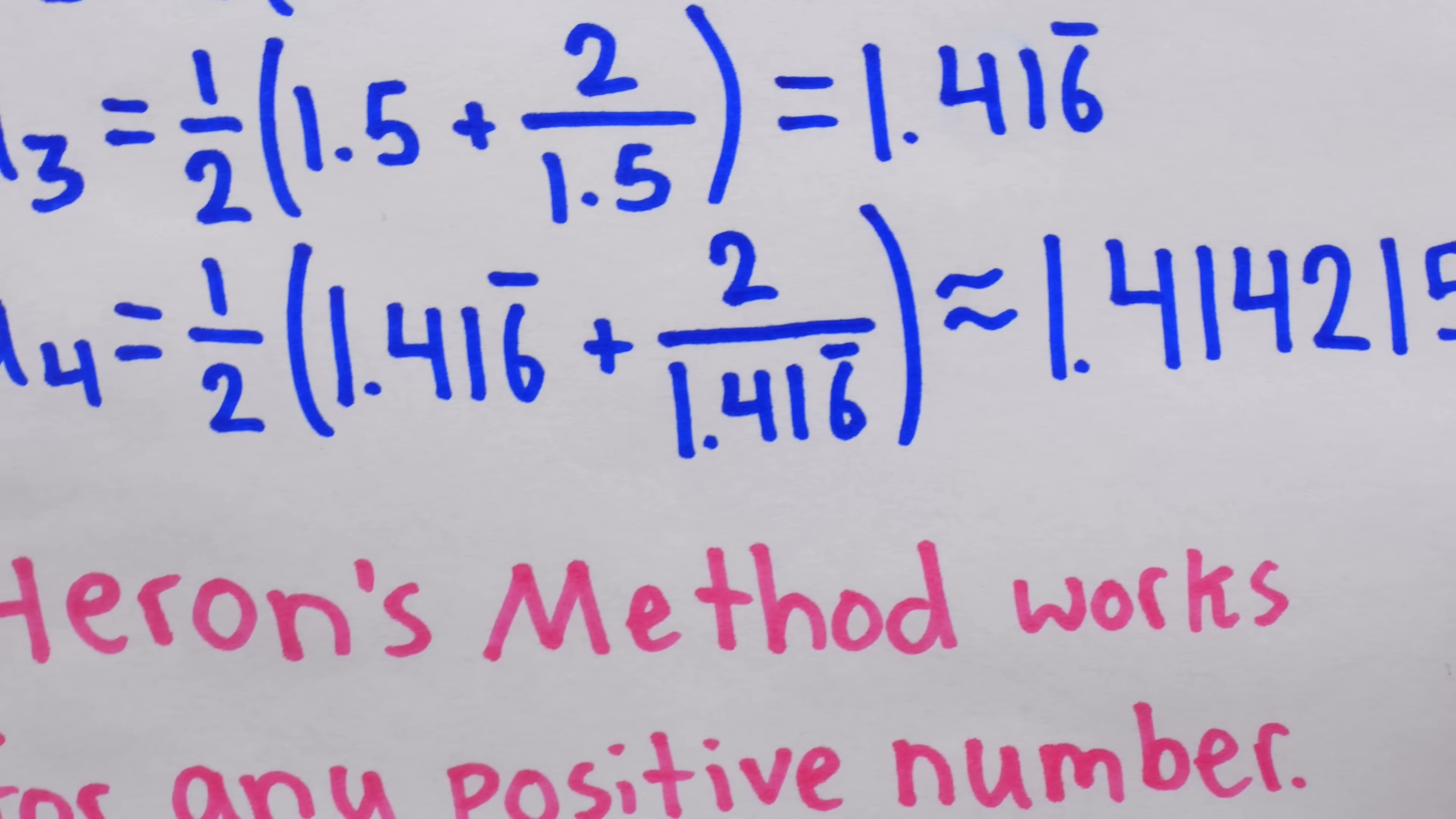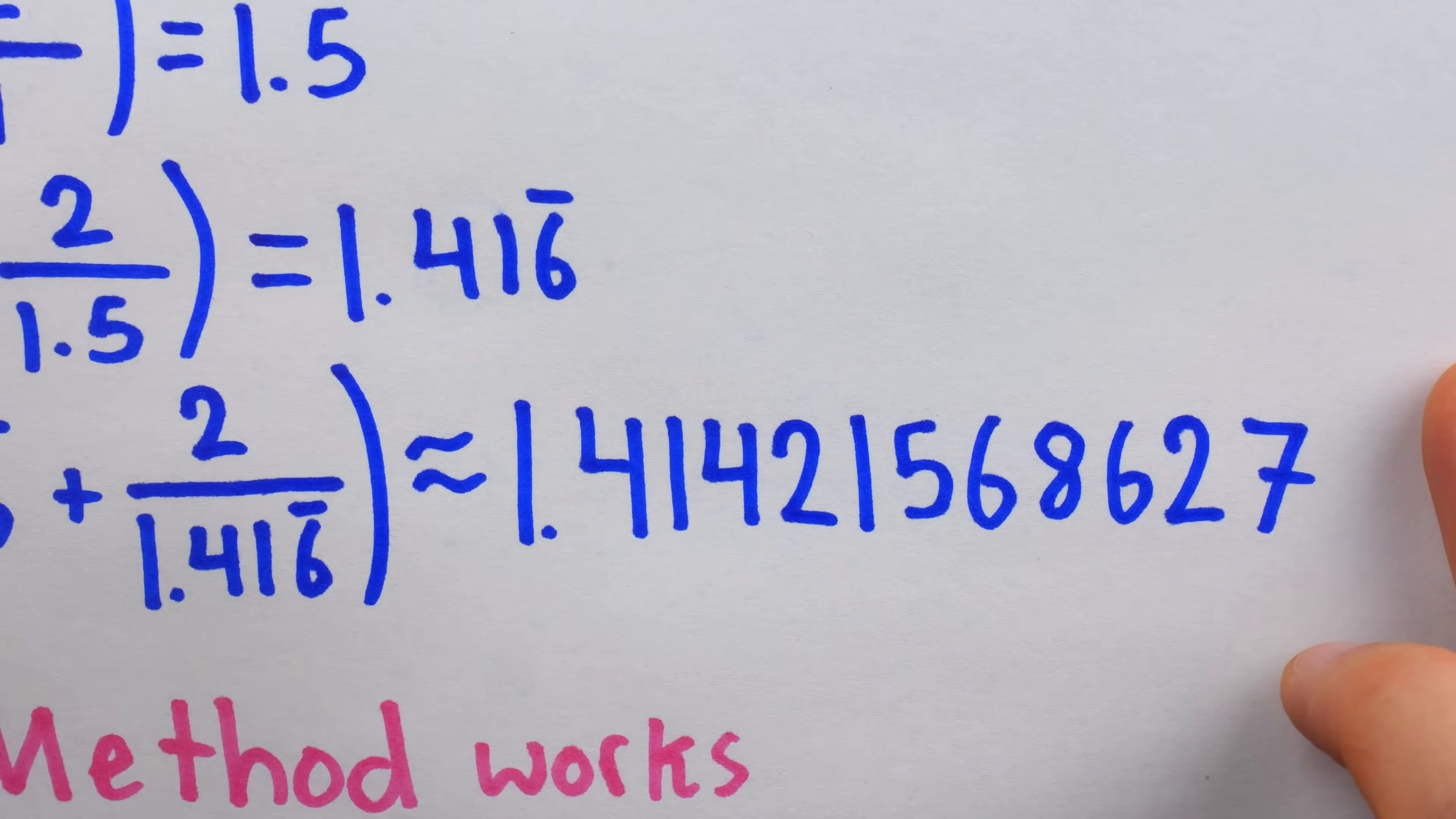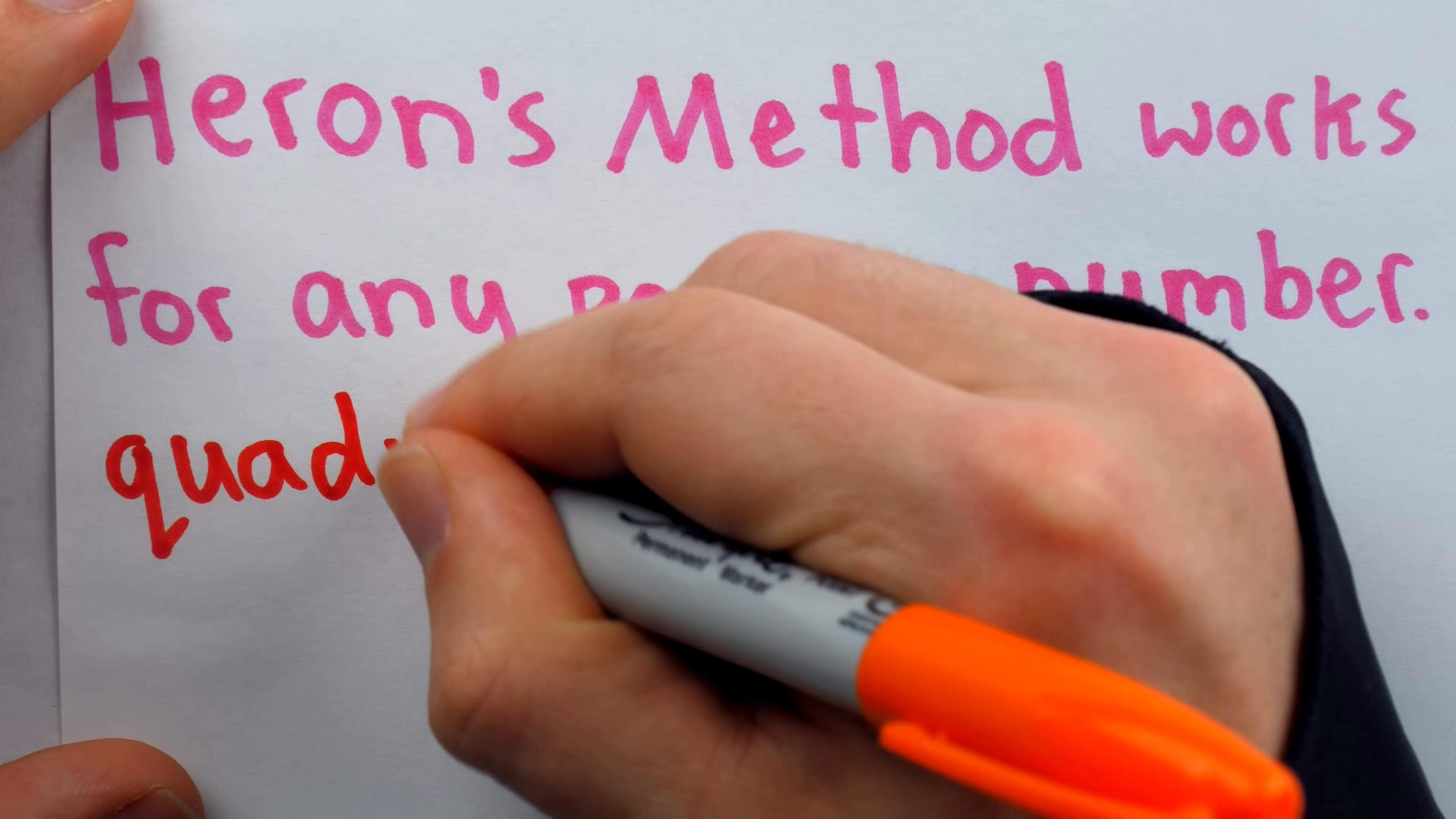When considering a process like this, that can be used for approximating something so important as square roots, it's important to consider how fast it works. In this case, it gave us a great approximation very quickly, but in general, if this method is really, really slow, then it wouldn't be very practical. But, like I said earlier, computers today still use this method.